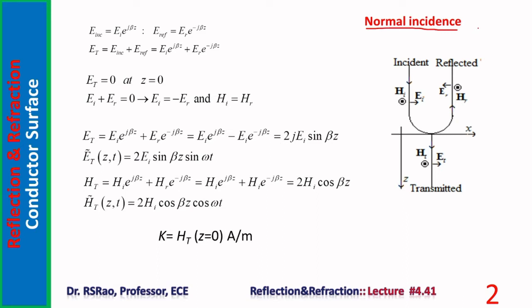To analyze the configuration, suppose the plane face of the perfect conductor coincides with the z equals zero plane. Above z equals zero, the entire region is free space; below z equals zero, it is perfect conductor. The incident wave travels normally towards the reflecting surface in the negative z direction, falls over the conductor plane face, and gets reflected.